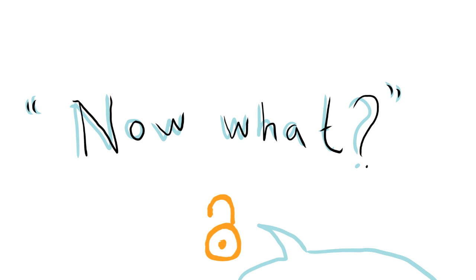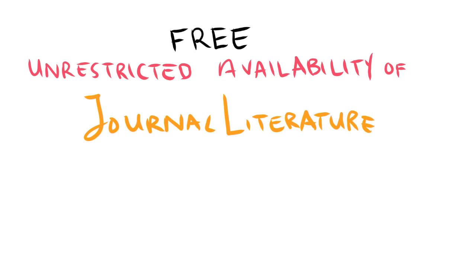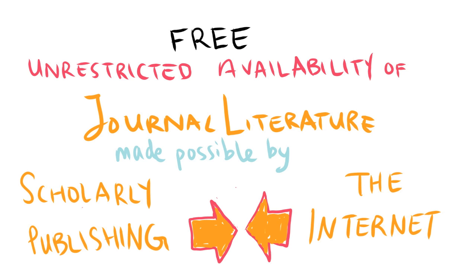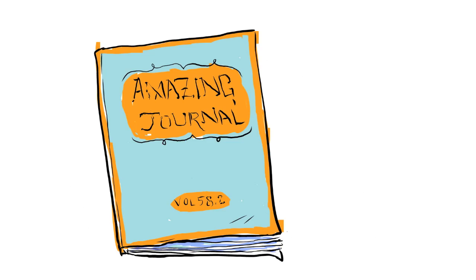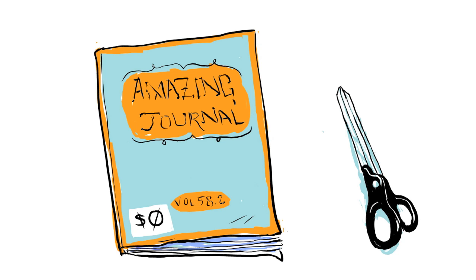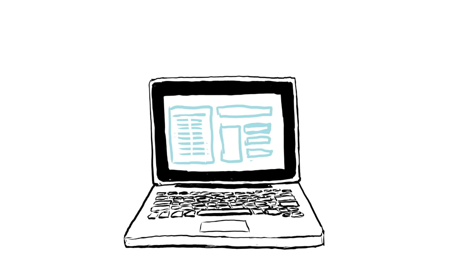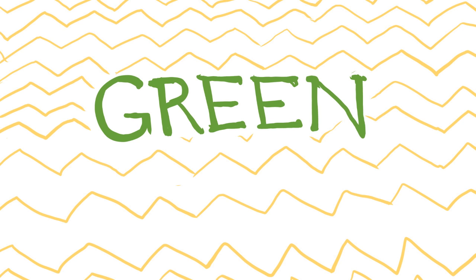But what can we do about it? That's the question that the open access movement is trying to answer. Open access refers to a free and unrestricted availability of journal literature made possible by the convergence of traditional scholarly publishing with the technological possibilities of the internet. There are journals where all published material is free to read and use — that's gold open access. Universities are making open databases of preprints of work produced by faculty and students — that's green open access.